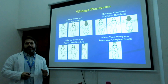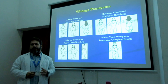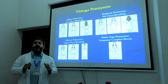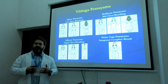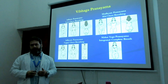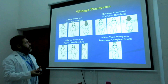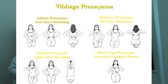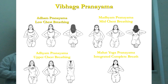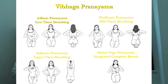One of the very important practices that we use in yoga therapy as well as the general yoga sadhana is the vibhaga pranayama — the sectional and sub-sectional breathing. We have the low, mid and upper parts of the lungs that we use, and we do the low chest, mid chest, upper chest breathing and combine it with the Mahathya Yoga Pranayama — the integrated complete breath.